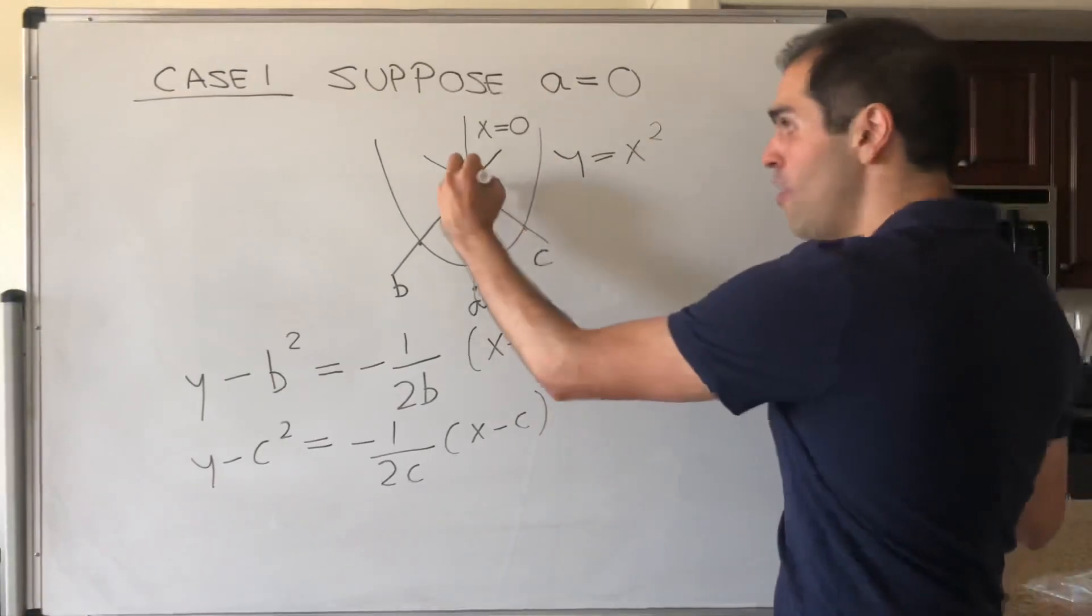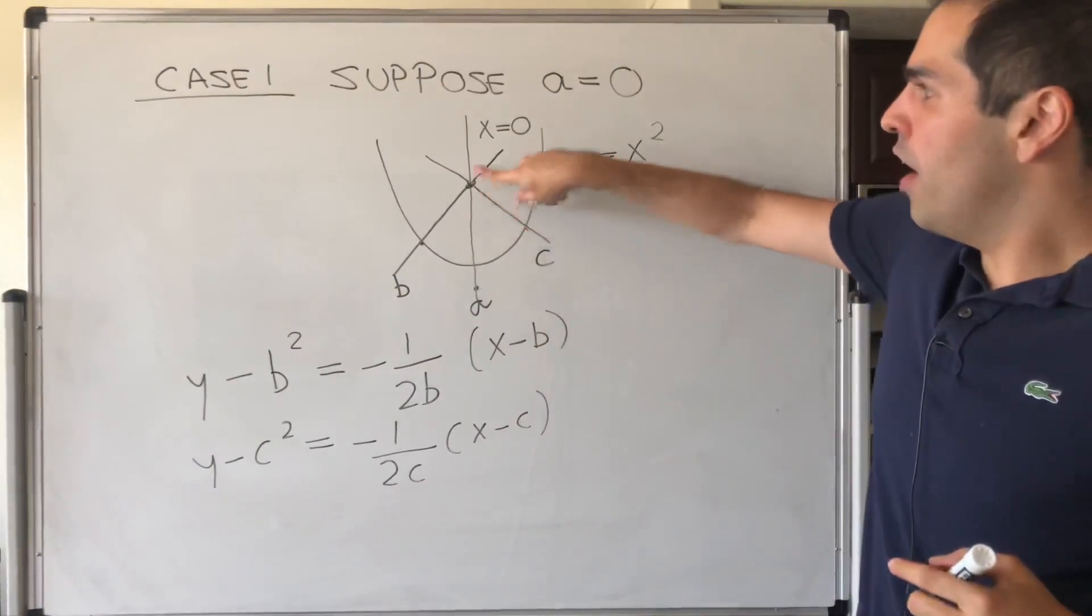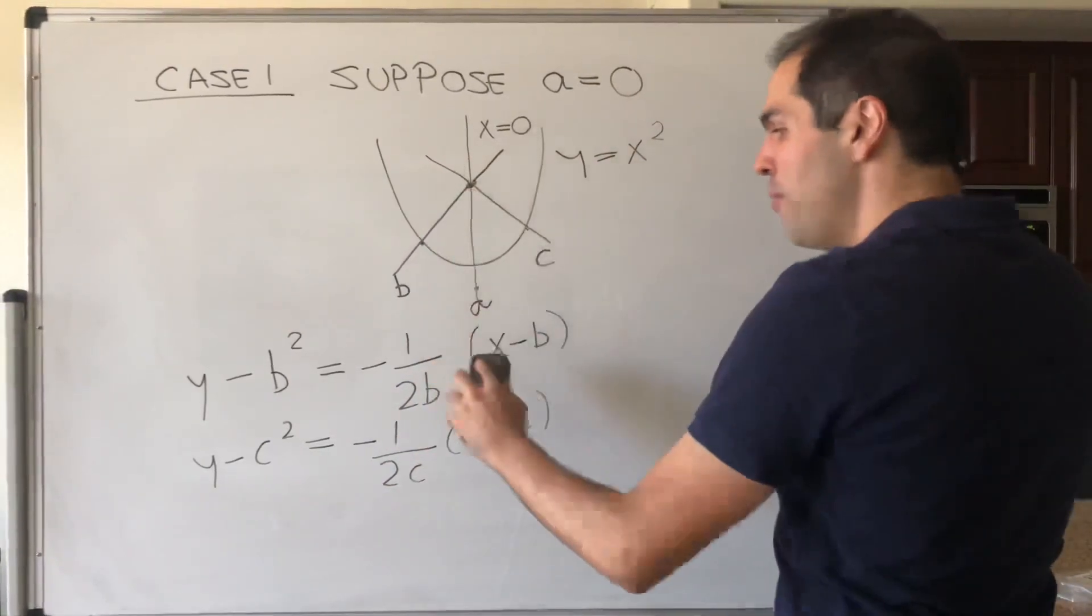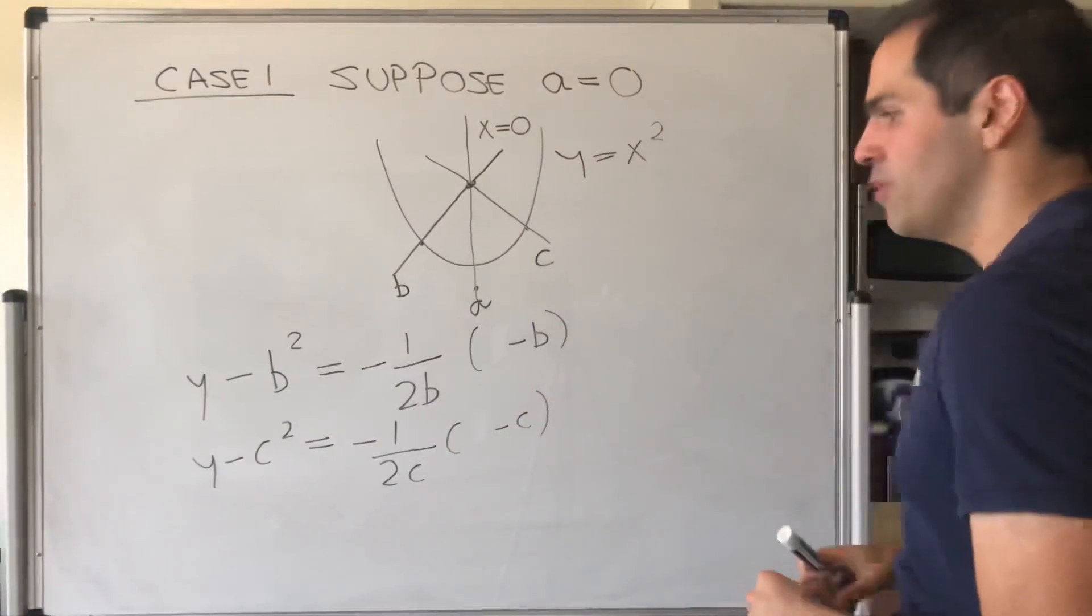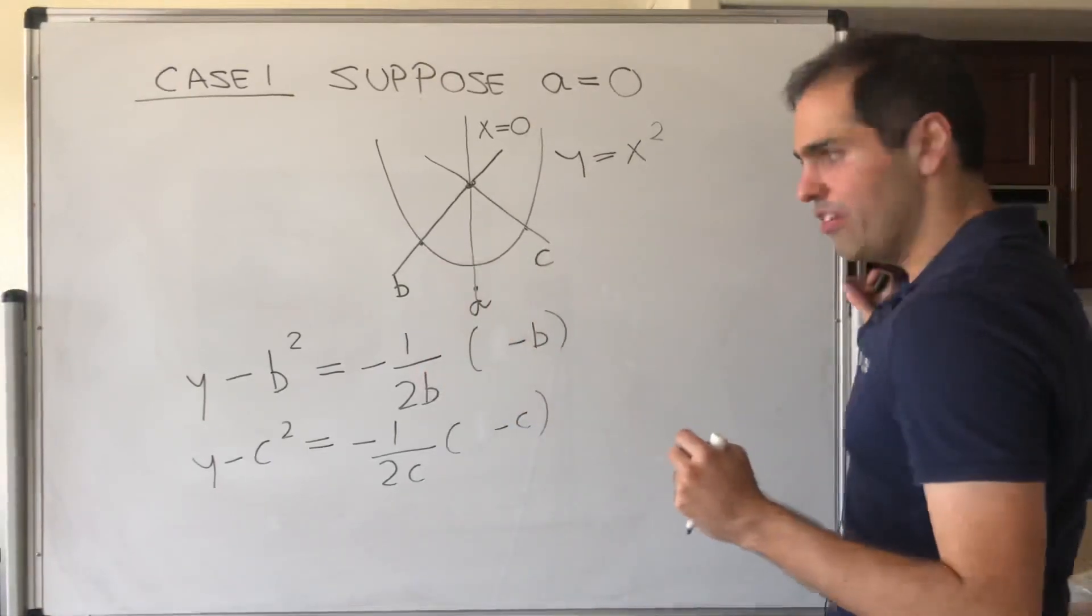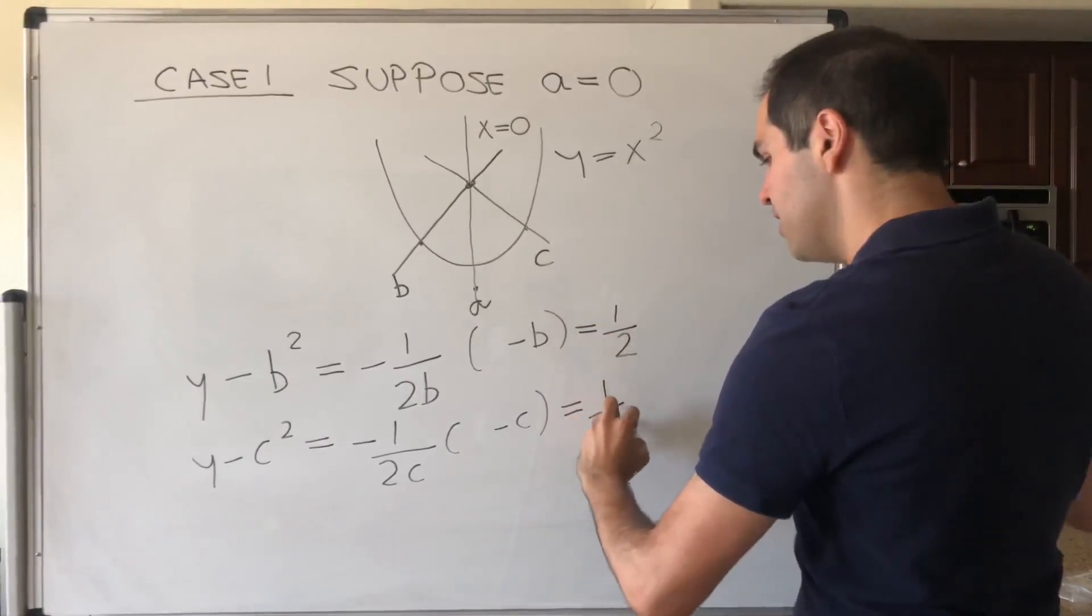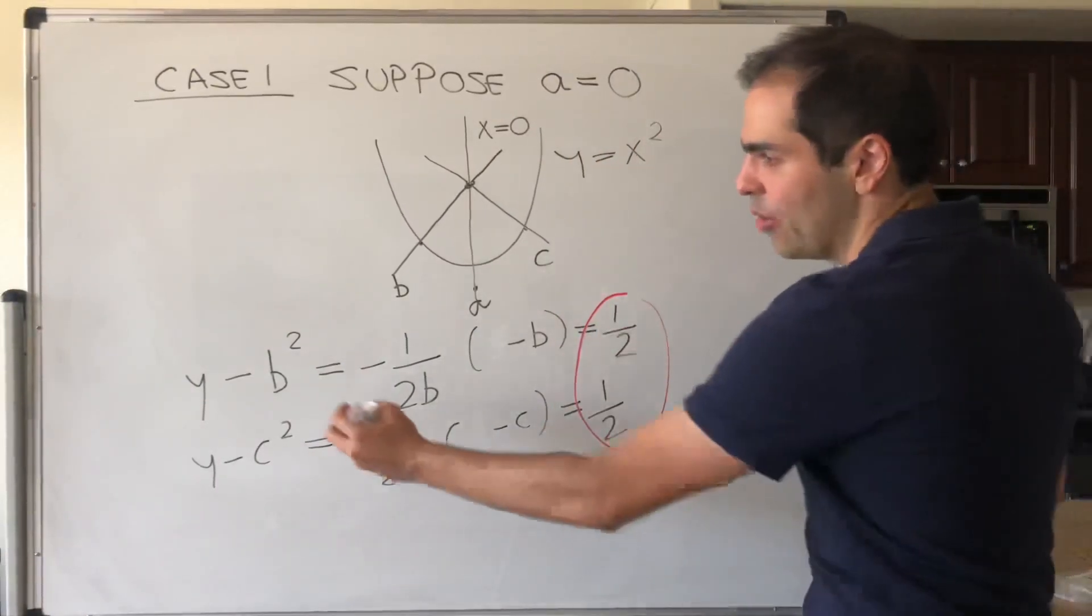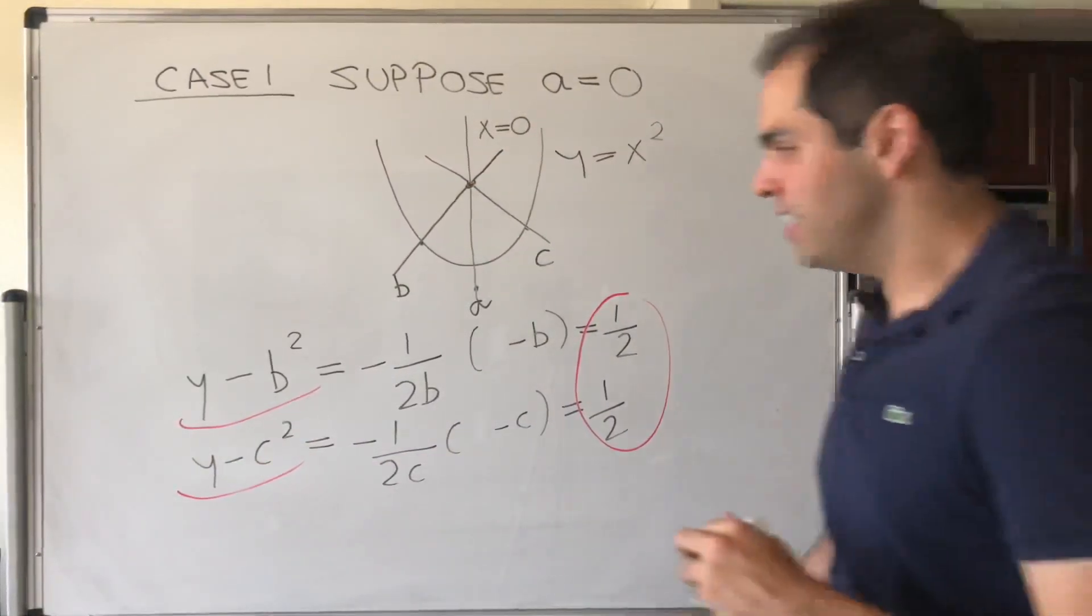And similar for c, we get y minus c squared equals minus 1 over 2c times x minus c. Now here's the thing. Focus now on the point of intersection. Then what do we know? On the one hand, we know that x equals zero. So, if you look at the common normal line, we can actually plug in x equals zero here, and x equals zero here, and what's nice is, is that this simplifies to simply 1 half. So this equals 1 half, this equals 1 half, and in particular, putting those two together,